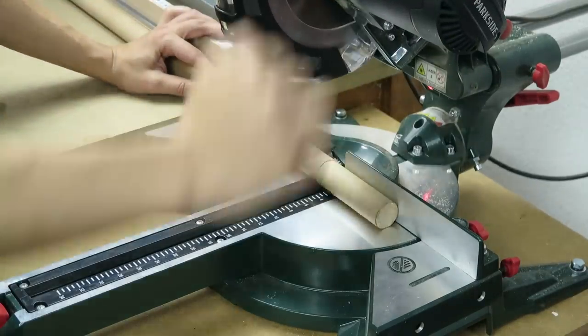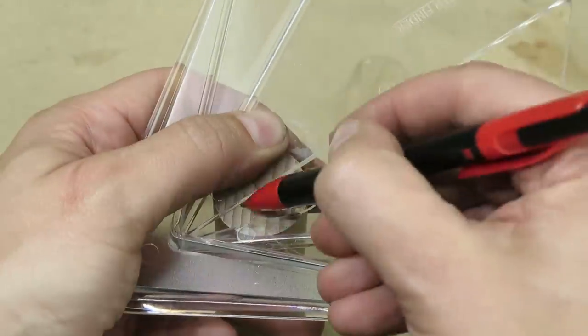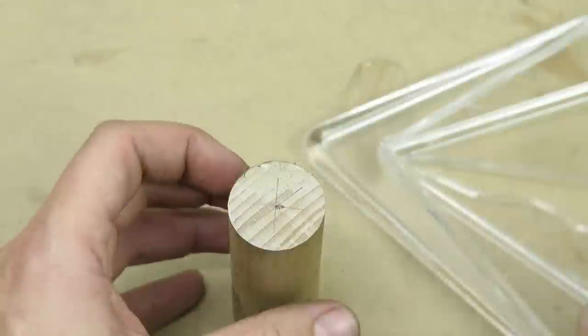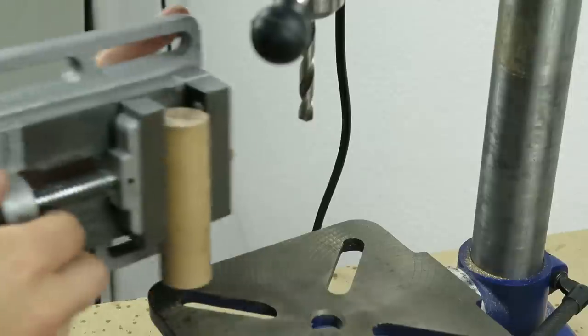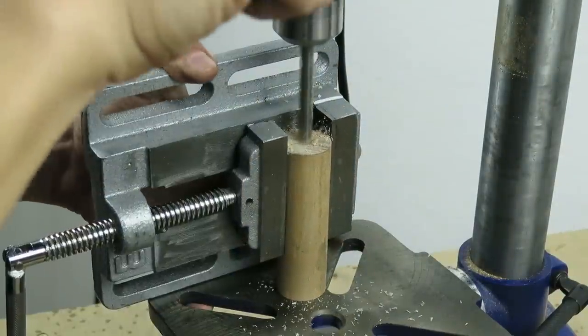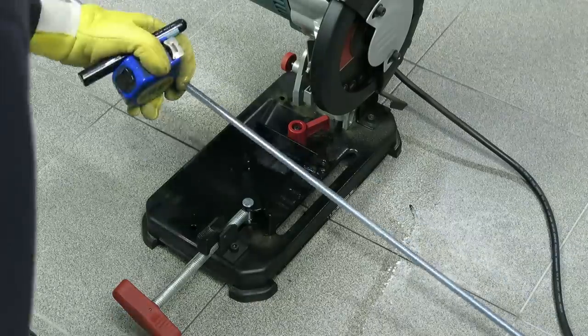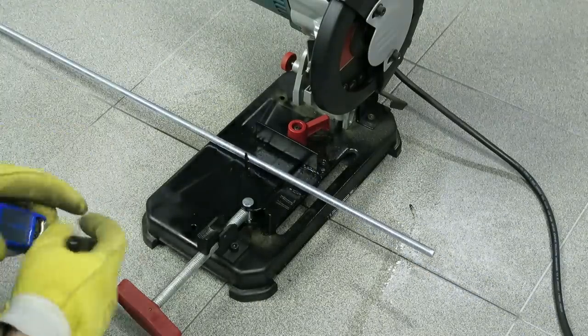For the handle I use a piece of beech wood and I mark the center with a center finder. And then I drill a hole with an 8.5mm drill so that I can tap the hole with a 10mm thread.